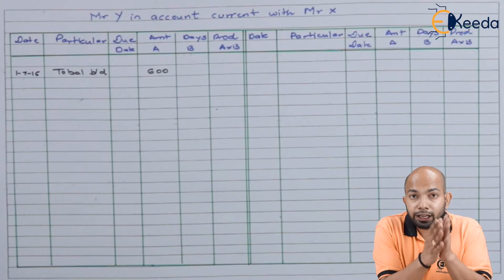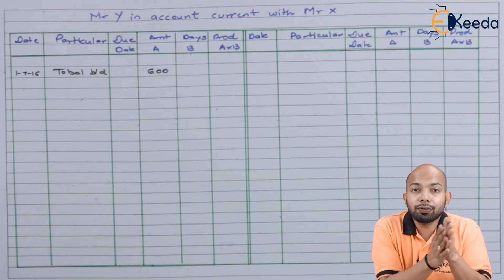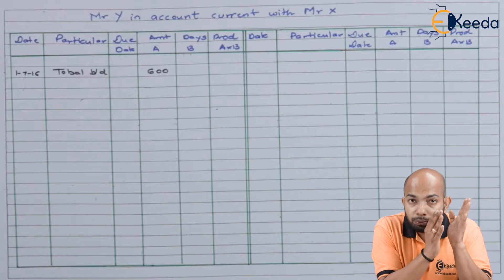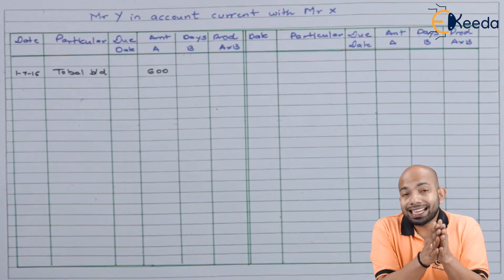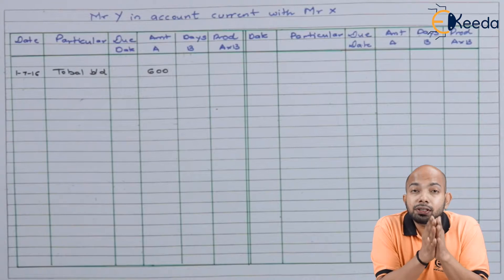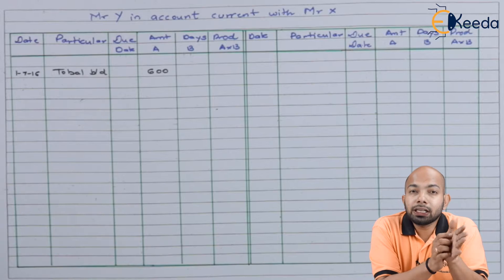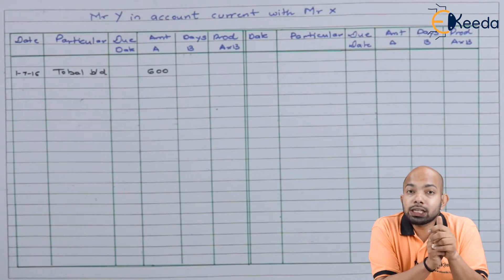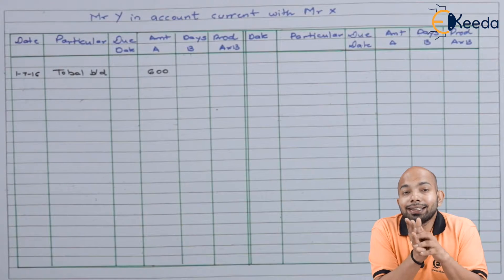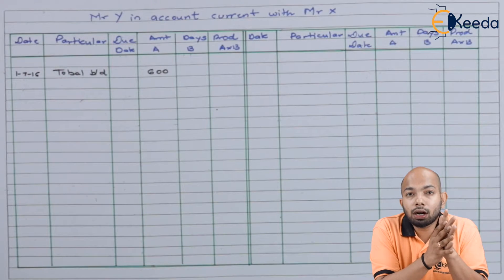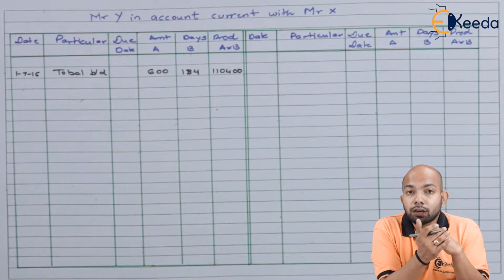To calculate the number of days for the first transaction, we figure out that from 1st of July until 31st of December — the closing date — is what we take into consideration. As this is the opening balance, that day itself is calculated, meaning the total July days onward. From 1st of July until 31st of December gives us a total of 184 days, so the product comes to 1,10,400.